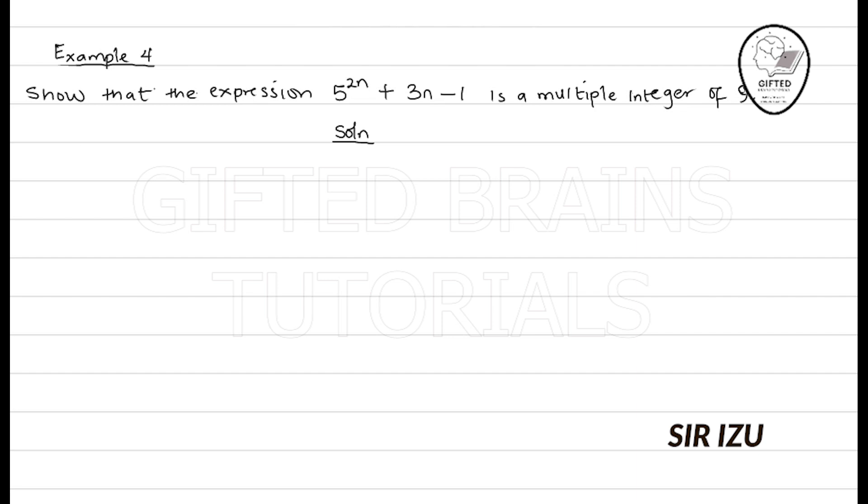Yeah, this is another example on mathematical induction. The question says, show that the expression 5^(2n) + 3n - 1 is a multiple integer of 9.